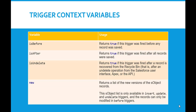The new context variable returns a list of the new versions of the SObject records. This SObject list is only available in insert, update, and undelete triggers, and the records can only be modified in before triggers.